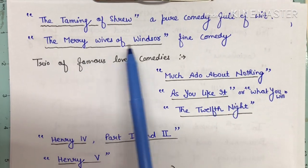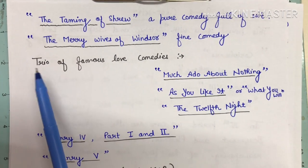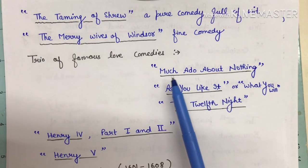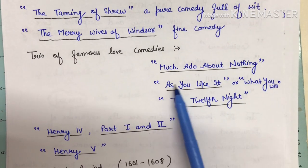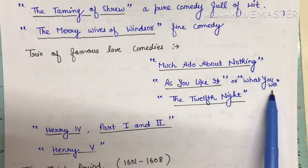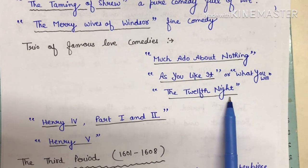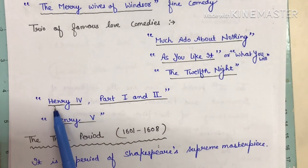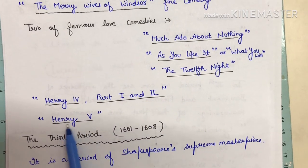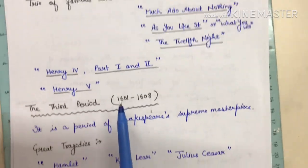After The Merchant of Venice, he wrote The Taming of the Shrew — a pure comedy full of wit. Next is The Merry Wives of Windsor, another fine comedy. There is a trio of famous love comedies: Much Ado About Nothing, As You Like It (also known as 'What You Will'), and Twelfth Night. He also wrote historical plays: Henry 4 Part 1, Henry 4 Part 2, and Henry 5.